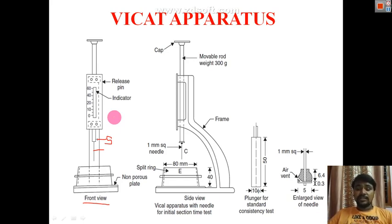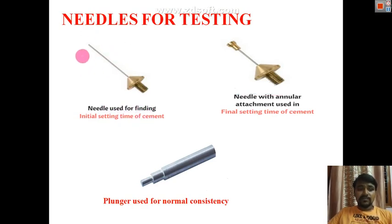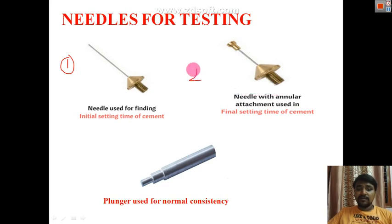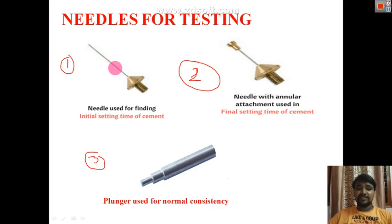The Vicat apparatus has a movable rod weighing 300 grams and a frame. It is used for normal consistency, initial setting time, and final setting time — all three tests — with different types of needles. The needle for initial setting time, the annular attachment needle for final setting time, and the plunger for normal consistency are the three attachments used.